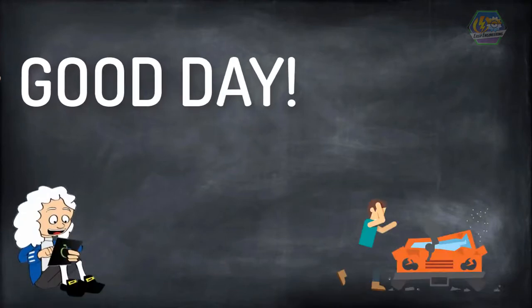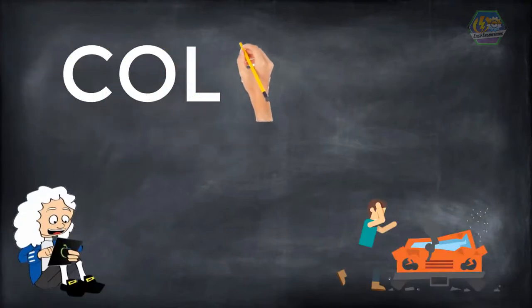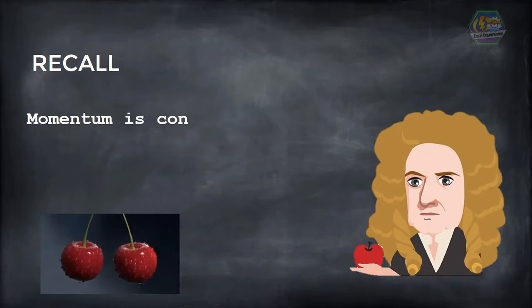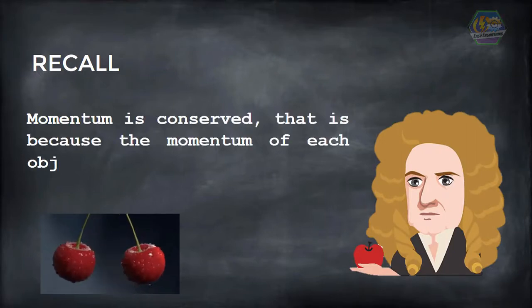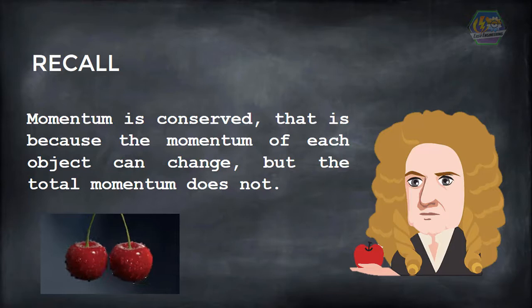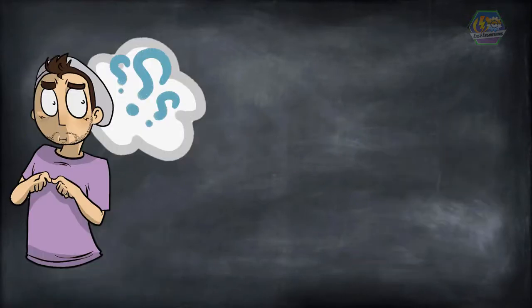Hello learners, this is Easy Engineering. Today we're going to talk about another interesting topic in physics, and that is collision. Recall in the previous video we found out that momentum is conserved because the momentum of each object can change, but the total momentum does not. Now why is that? To explain further, let's talk about momentum and kinetic energy.